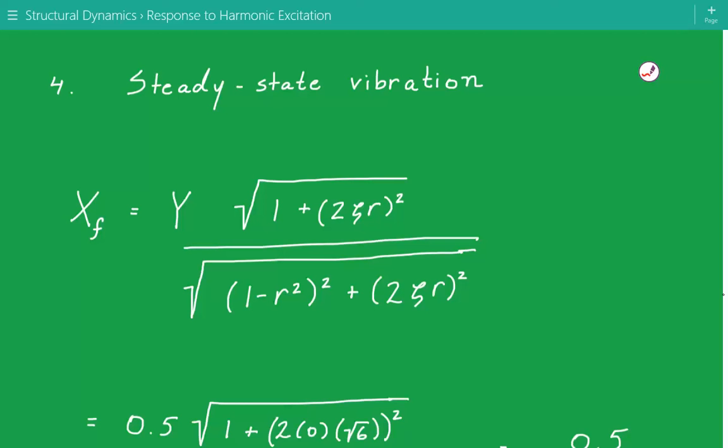Times the square root of 1 plus 2 times zeta r squared divided by the square root of 1 minus r squared squared plus 2 times zeta r squared. So damping is negligible, so this term and this term will go to zero.